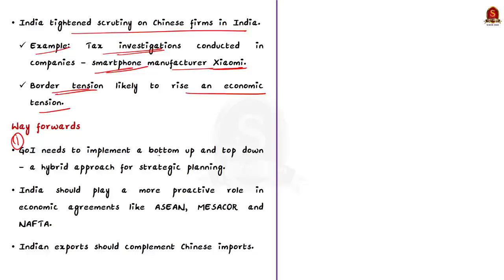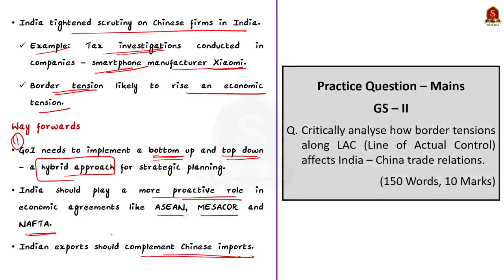Note that India has also tightened scrutiny on Chinese firms in India. For example, tax investigations were conducted in companies like smartphone manufacturer Xiaomi. So due to border tensions economic tension is also rising between India and China. Hence, India must take the following steps. Firstly, government of India needs to implement a hybrid approach for strategic planning which includes both the component of bottom-up and top-down approach. Secondly, India should play a more proactive role in economic agreements like ASEAN, MERCOSUR and NAFTA. Thirdly, Indian exports should complement Chinese imports. These are all some suggestions which India can take to reduce the economic tensions and the economic dependence of Indian economy and Chinese economy.